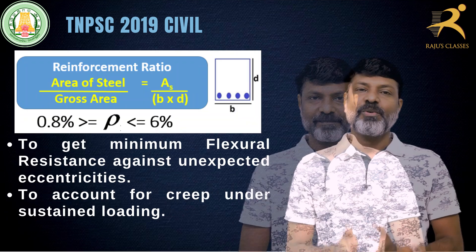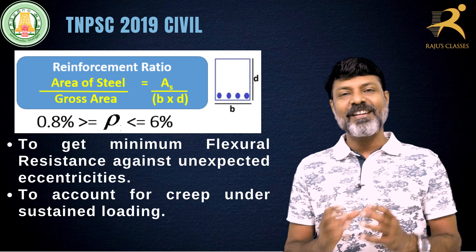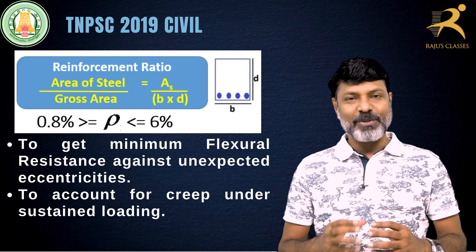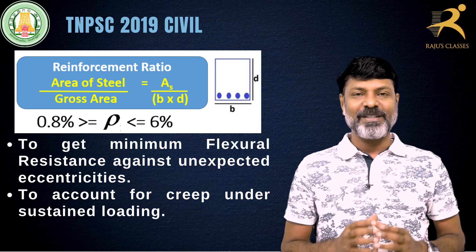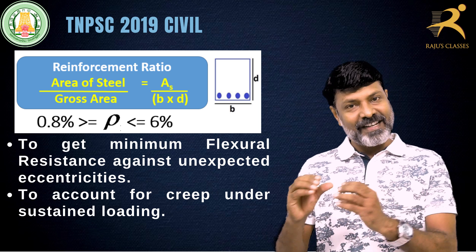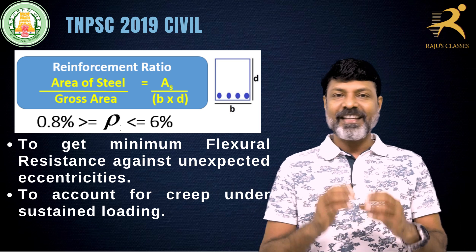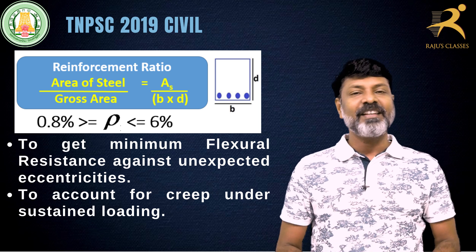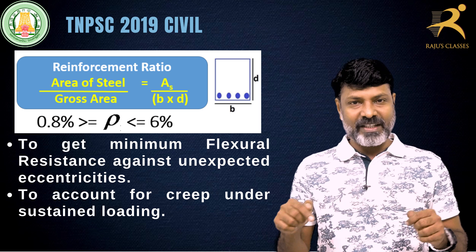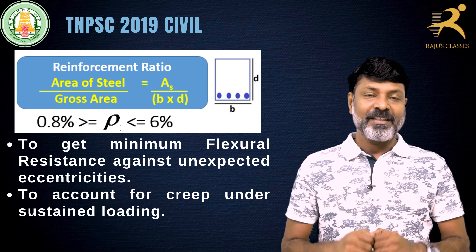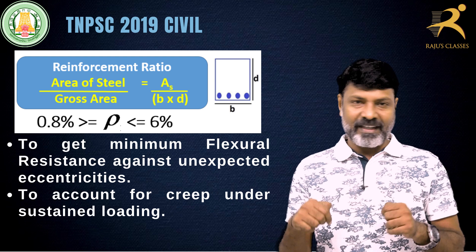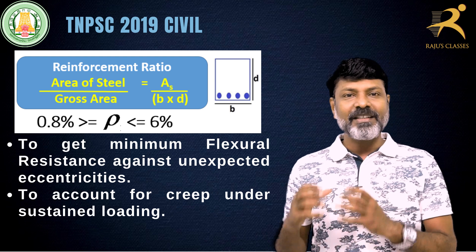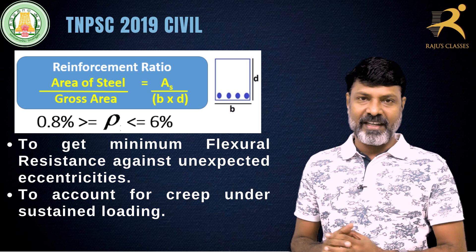Let's look at the analysis. What is the concept of this question? The concept is the reinforcement ratio — it is the area of steel divided by the cross-sectional area of the column, that is the area of steel divided by the concrete area, which is B into D, the cross-sectional area.